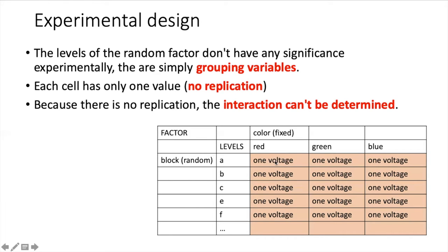Because we only have one value per cell, in other words no replication within the cells, there isn't any way that we can determine information about the interaction. The reasons for that are somewhat technical, but just take my word for it, we are not going to be able to assess the interaction in this particular situation.